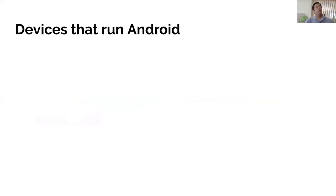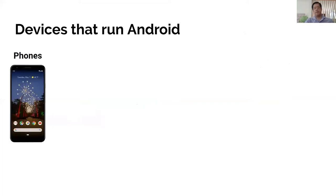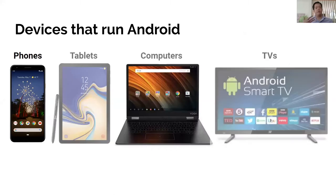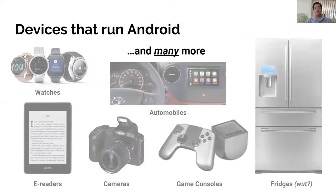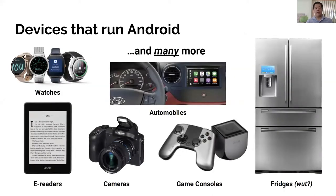With the open source software, Android is not just on phones — it's hosted on a whole bunch of other devices as well: tablets, computers, televisions, watches, e-readers, cameras, and game consoles. There's apparently even a fridge that runs Android, which is pretty interesting.